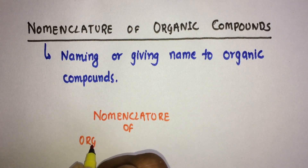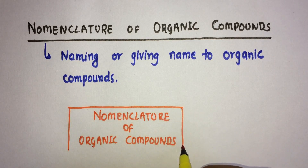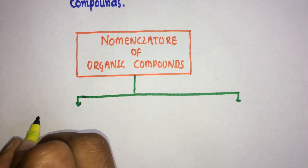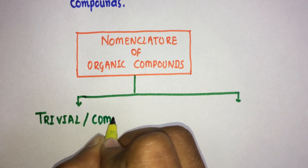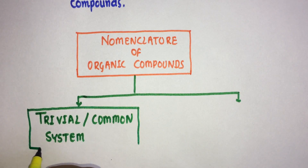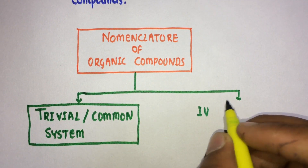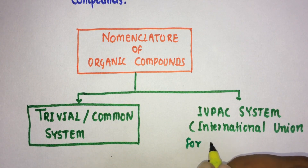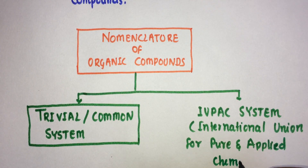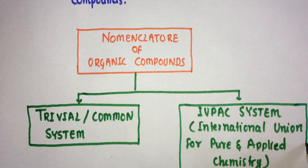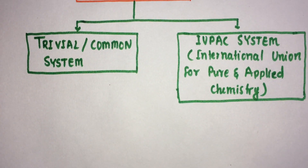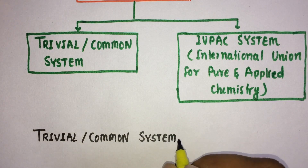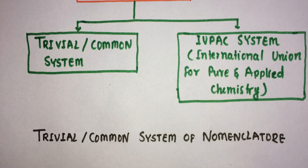Nomenclature of organic compounds can be done in two ways. The first naming system is the trivial system or common system of nomenclature, and the second naming system is the IUPAC system — that is, the International Union for Pure and Applied Chemistry. For now, we will discuss the trivial system, that is, the common system of nomenclature.